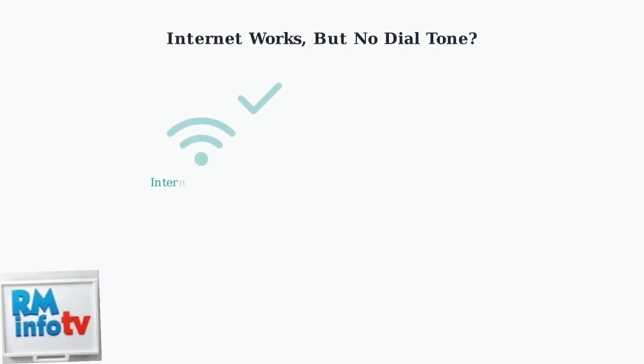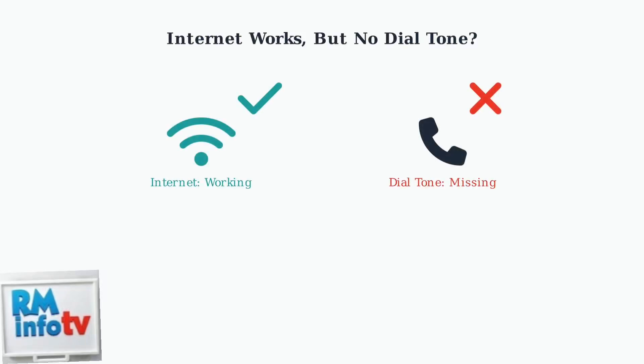When your internet connection works perfectly but you have no dial tone on your phone, the cause depends entirely on what type of phone system you're using. There are two main types of phone systems: traditional landlines using copper wires, and modern VoIP systems that use your internet connection.